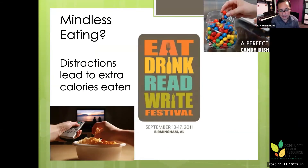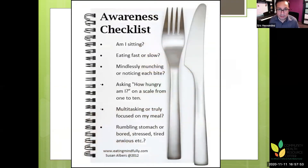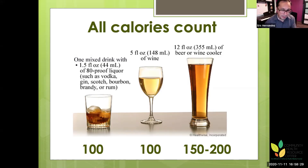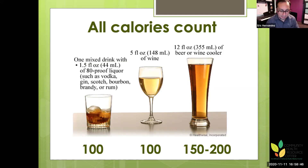Mindless eating — eating while distracted — leads to consuming without awareness, and we need to stay present to control blood sugar. Ask yourself: am I sitting while eating? Am I eating slowly? Am I stressed, bored, or actually hungry? Having a scheduled eating time helps. Remember all calories count — alcohol must be processed by the liver and converted to fat, so if you drink wine with dinner, compensate by reducing carbs elsewhere in the meal.